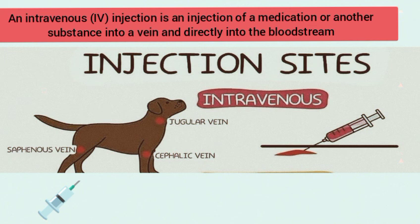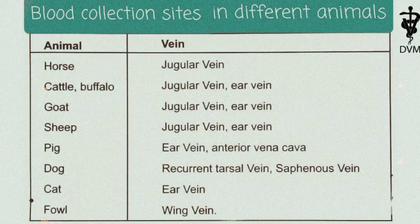Intravenous injection involves injection of a medication or another substance into a vein and directly into the bloodstream. It is one of the fastest ways to get a drug into the body. Administration involves a single injection followed by the insertion of a thin tube or catheter into a vein, as shown.